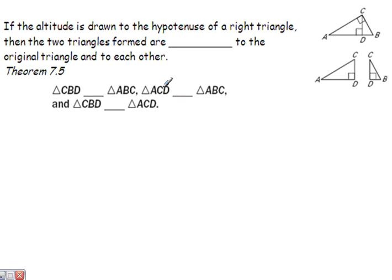If we look at that in your notes: if the altitude is drawn to the hypotenuse of a right triangle — there's the altitude, drawn to the hypotenuse — then the two triangles formed are similar to the original triangle and to each other. So these triangles are similar, and those triangles are similar, and those triangles are similar. I've formed three pairs of similar triangles.